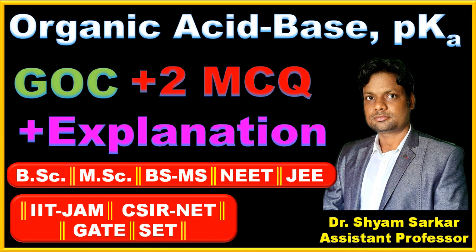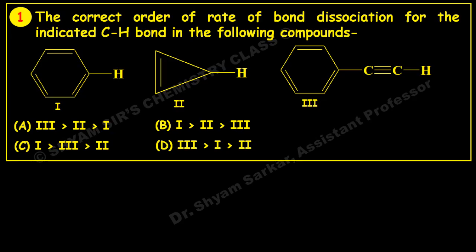Let us see the first question: the correct order of rate of bond dissociation for the indicated C-H bond in the following compounds. Three compounds are given and respective C-H bonds are given here, so four different orders are given in the four options. You will identify which order is correct.